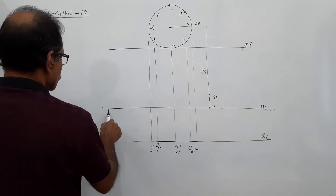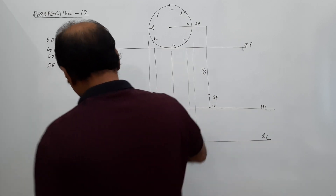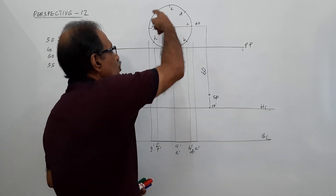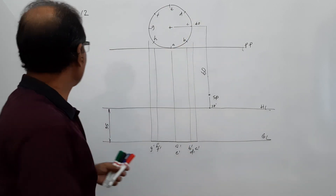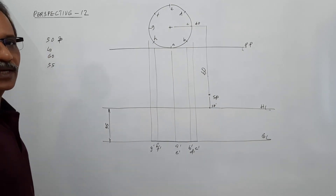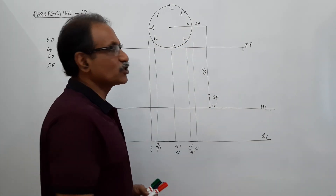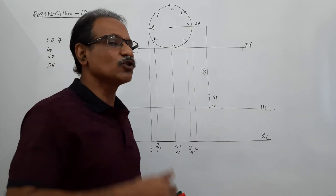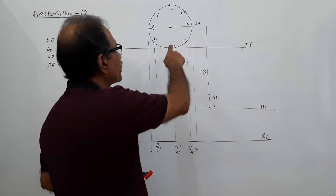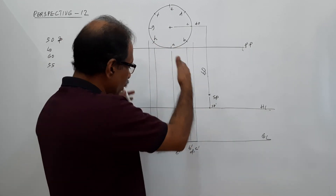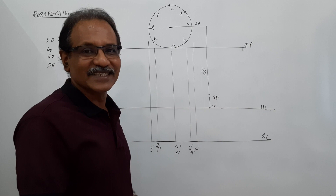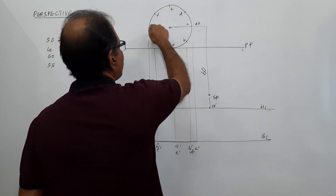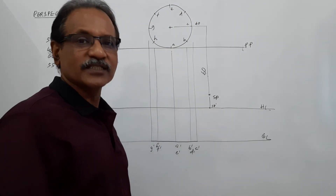First, draw VP, then draw the circle touching the picture plane — diameter is 50 mm. Take a minimum of eight points on the circumference of the circle, divided into eight equal parts of 45 degrees each, or 12 equal parts of 30 degrees each. I prefer eight parts because drawing without instruments is risky. Points A, B, C, D, E, F, G, H are the eight points on the circumference of the circle.